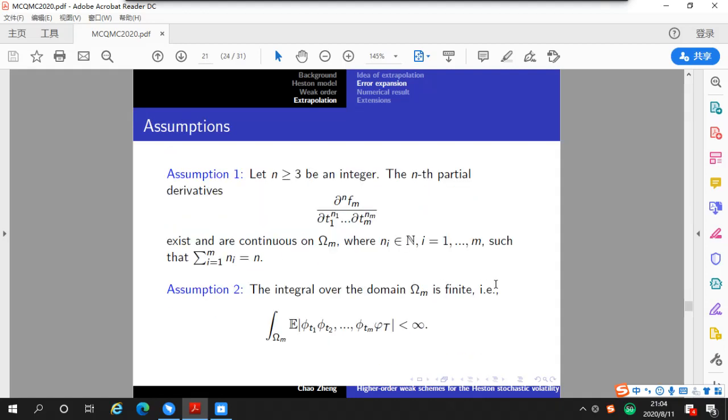Now, we shall put some assumption on the integrand. The assumption is put on the simplex domain rather than the hypercube domain. So, the first assumption says that F_m, the integrand, the derivative of the integrand must exist and be continuous. So, this assumption means that the integrand is sufficiently smooth. The second assumption says that this integration should be finite.